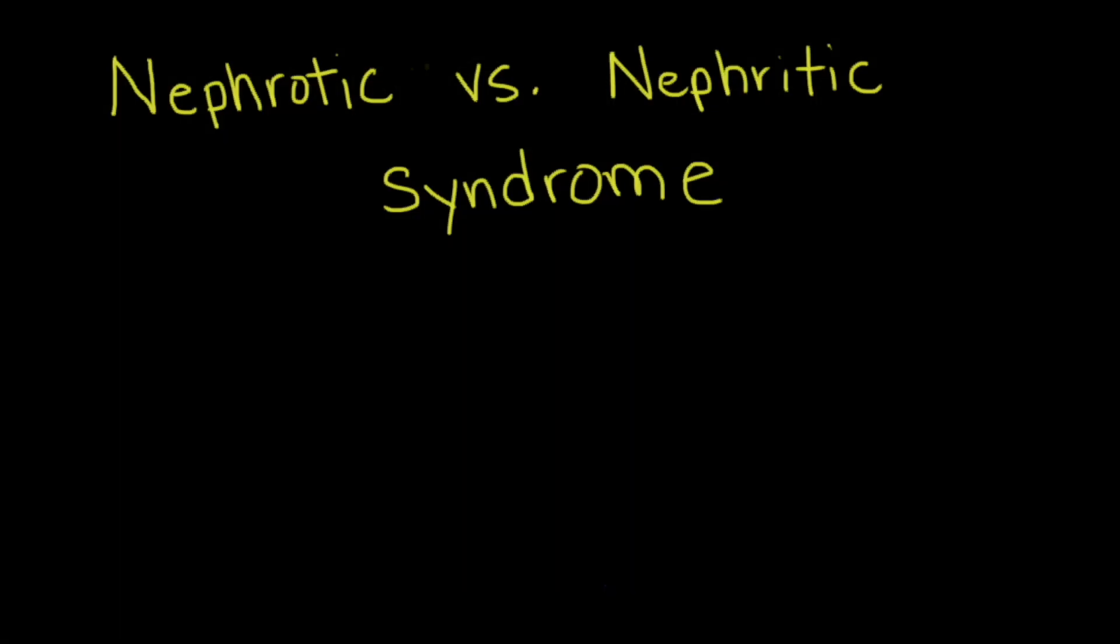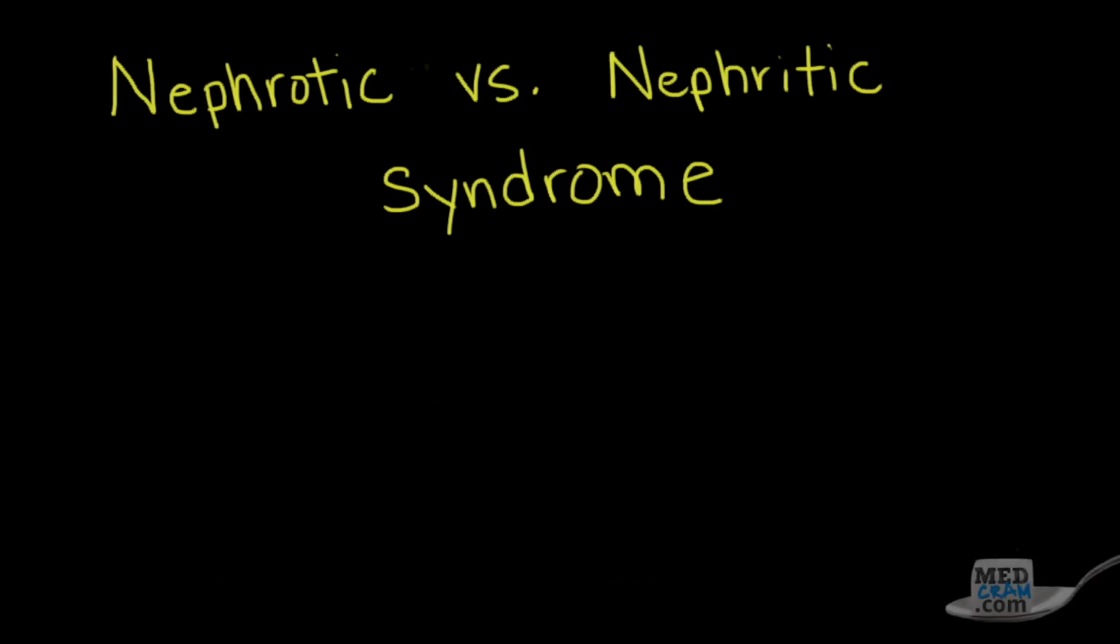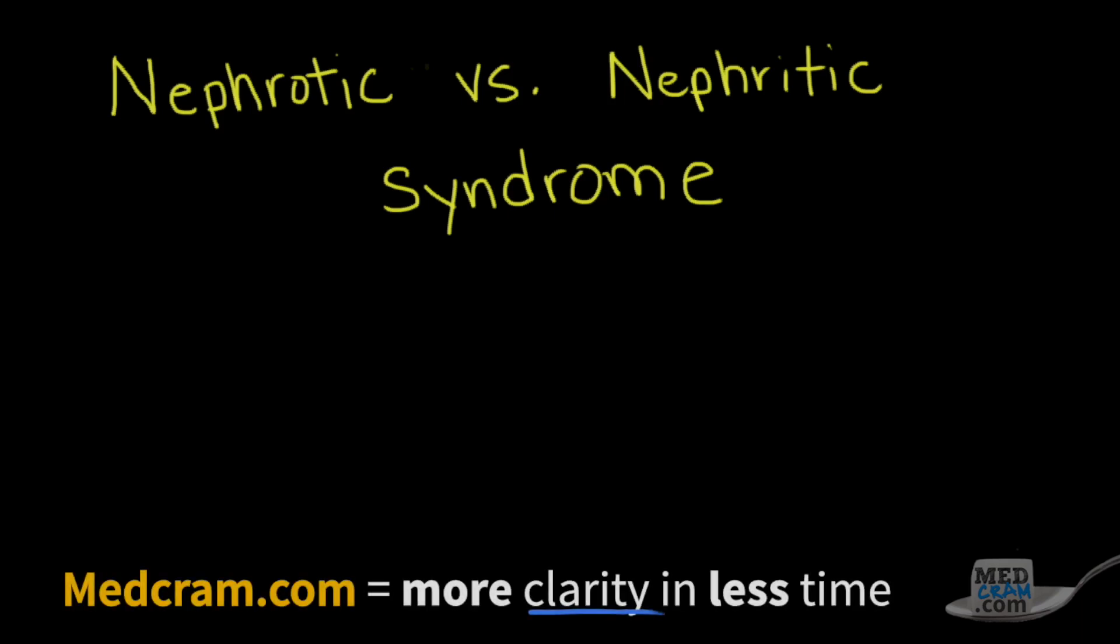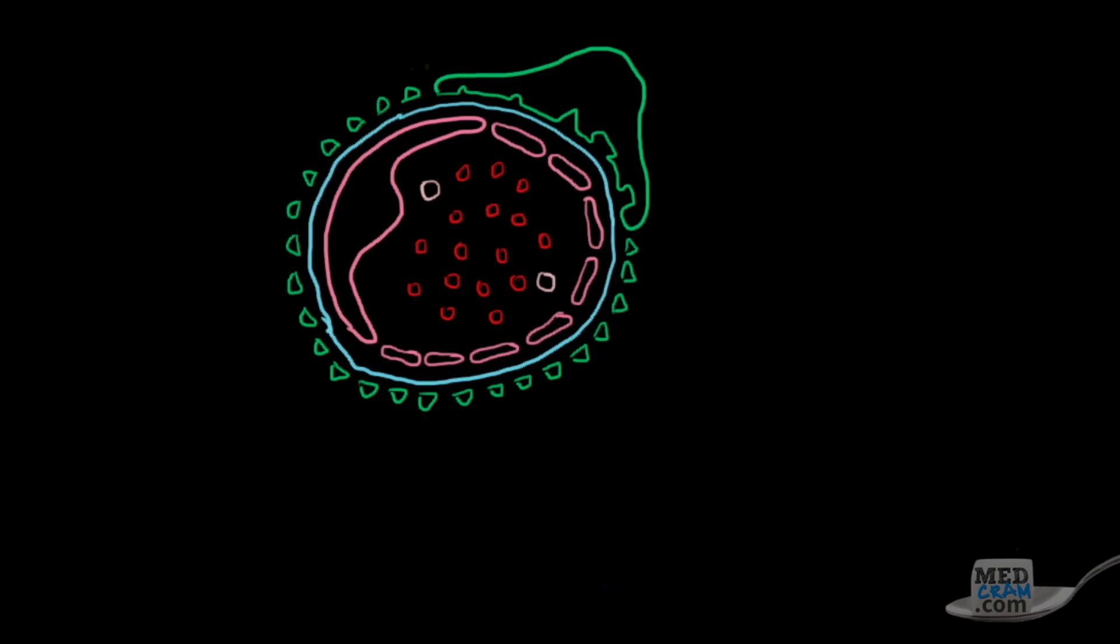Welcome to another MedCram lecture. We're going to talk about nephrotic versus nephritic syndrome. These are both syndrome types that occur in the kidney. What's the difference between them and why do they happen in the first place? To understand that, we really need to get into the pathophysiology of how these syndromes are different.